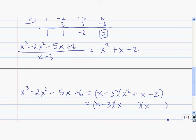And to factor this, we have plus 2 and minus 1. So the complete factored form of the original polynomial is x minus 3 times x plus 2 times x minus 1.